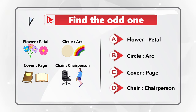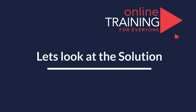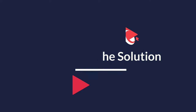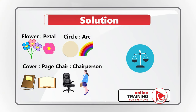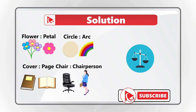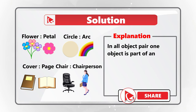Give yourself a little bit of time to see if you can come up with the solution. Ready or not, I am moving forward to share my version. The key here is to determine the relationship between the objects. In all object pairs, one object is part of another.